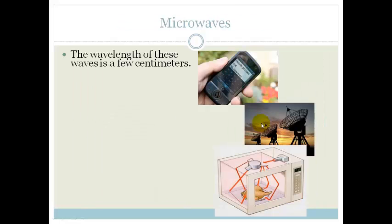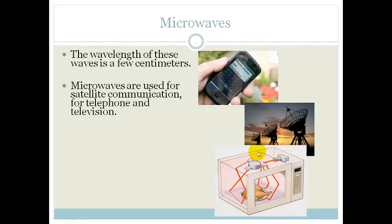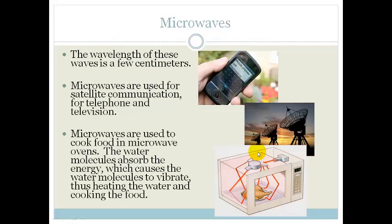Microwaves are used in mobile phones for communication and of course in microwave ovens. The wavelength of these waves is only a few centimeters. They are used for satellite communication, telephone, and television. When cooking food, the water molecules in your food absorb energy from the microwaves, causing them to vibrate, which generates heat and cooks the food from the inside out.